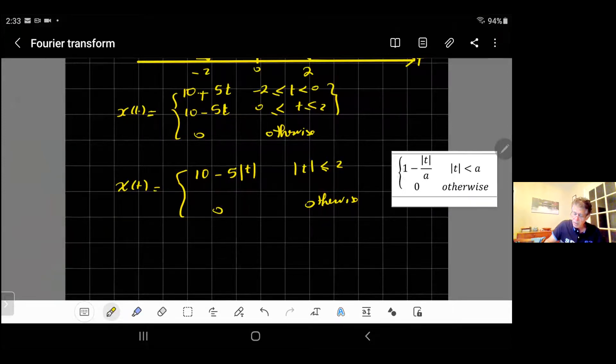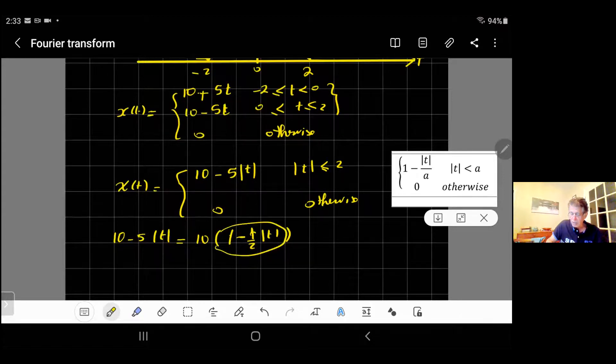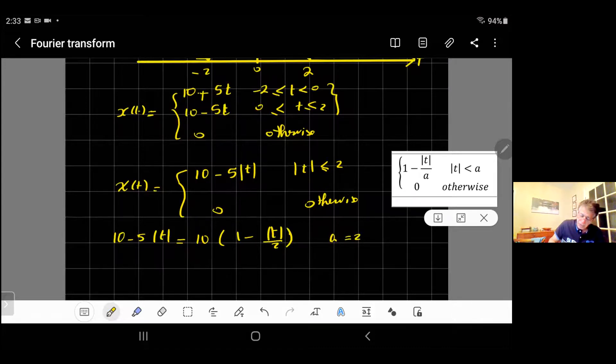That's what we have: 10 minus 5 absolute t, and this one is 1 minus t over a. So I'll try to get something close to that. I can write 10 minus 5t as I take 10 as a common factor: 10 times (1 minus 1/2 t). So now inside it's close to this one. I can write it even more clearly to make it exactly the same: it's 1 minus absolute value of t divided by 2. So my a is equal to 2.